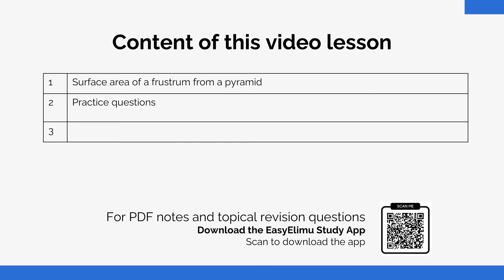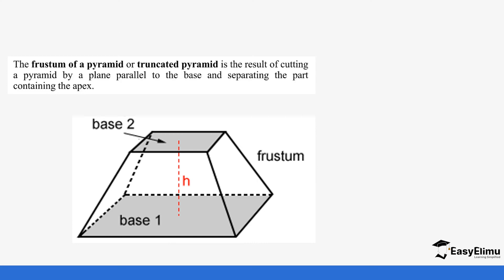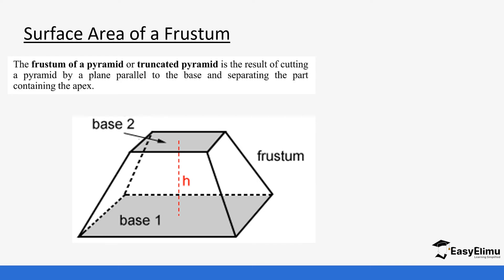Remember previously we looked at the surface area of a frustum from a cone, and you'll notice there is a slight difference. In both cases we are looking at the curved surface area. So even when we look at the frustum of a truncated pyramid, we're just going to take the base areas and the curved area.